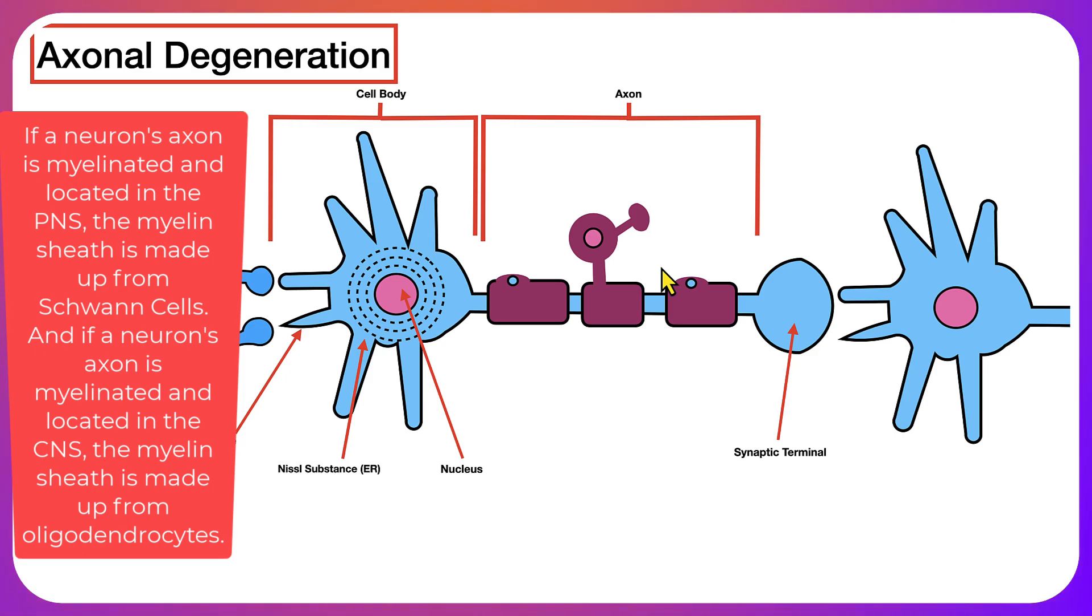On the axon, if the cell is myelinated, the myelin is going to be generated by different types of cells. If the neuron is in the peripheral nervous system and myelinated, the Schwann cells are going to be responsible for making the myelin sheath. And if the neuron is myelinated and in the central nervous system, the myelin sheath is going to be generated by the oligodendrocytes.